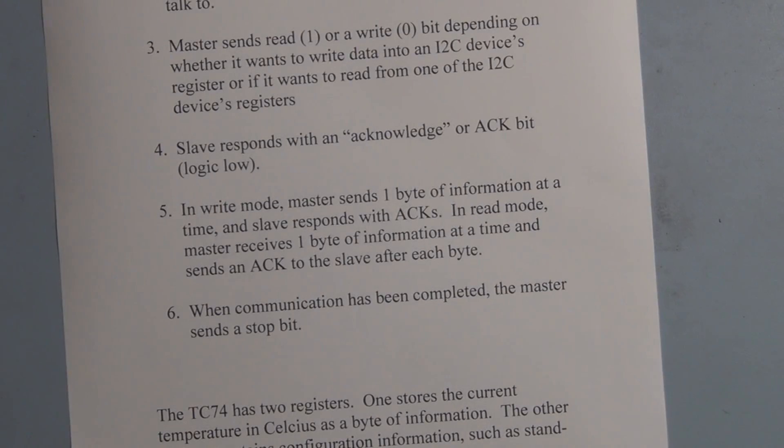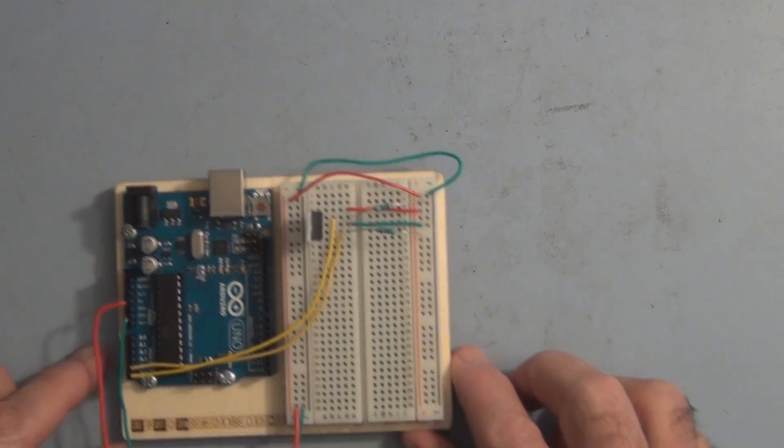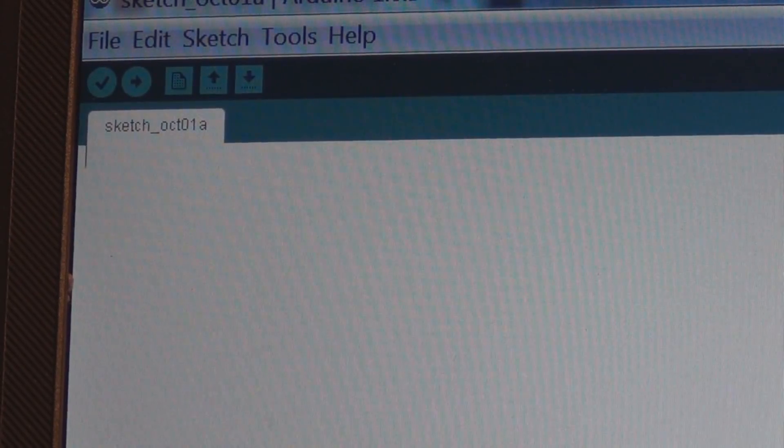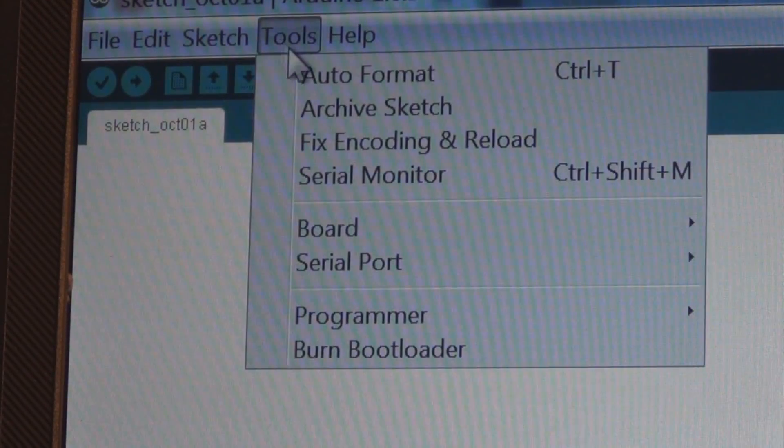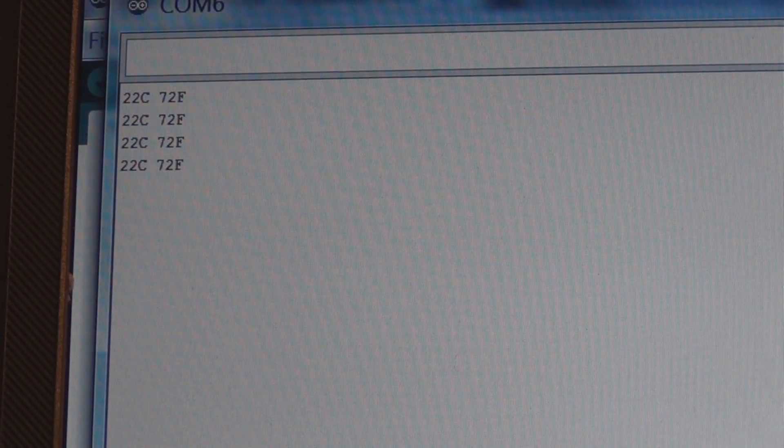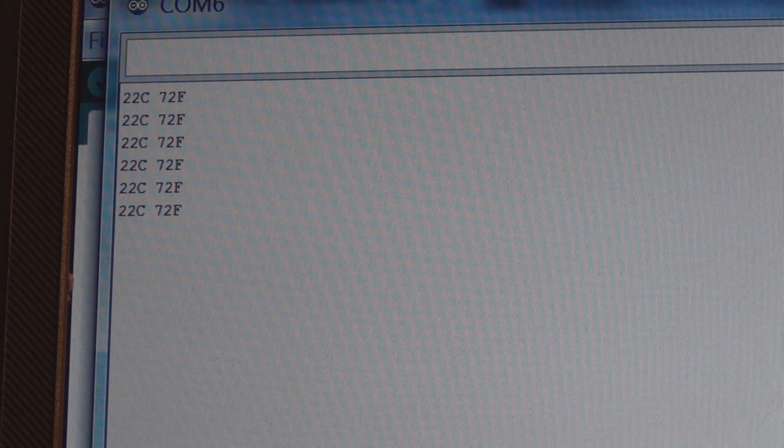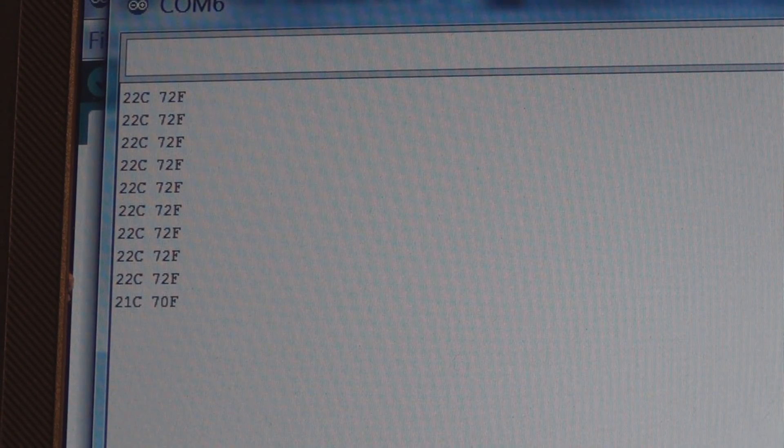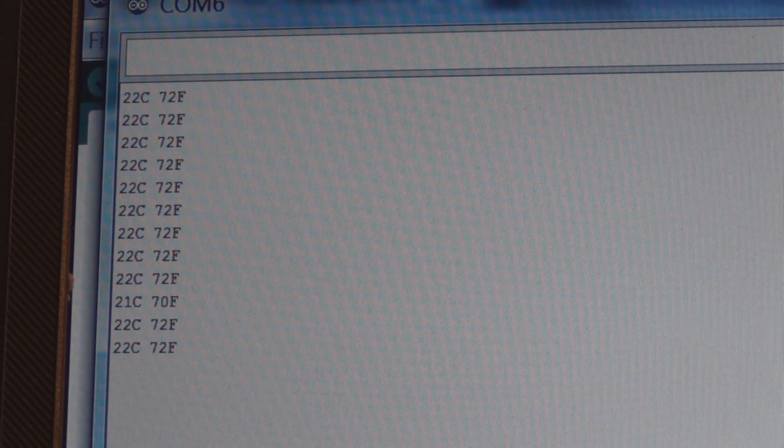So let me hook up the Arduino and we can measure, we can monitor the temperature with the serial monitor program. So let me open up the monitor program and we can see the temperatures. And there's the degrees Celsius. And also in the sketch, there's a formula for converting Celsius to Fahrenheit. That's why it's printing out Fahrenheit also.